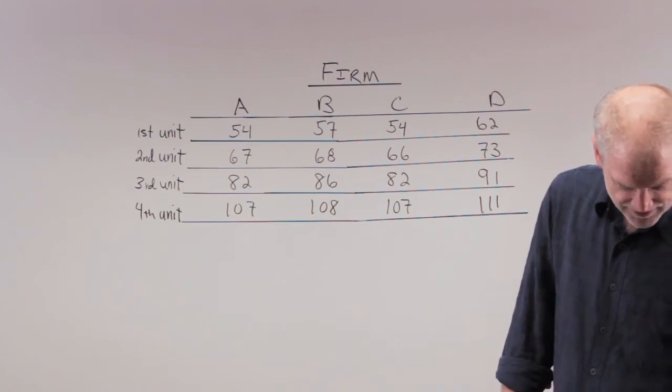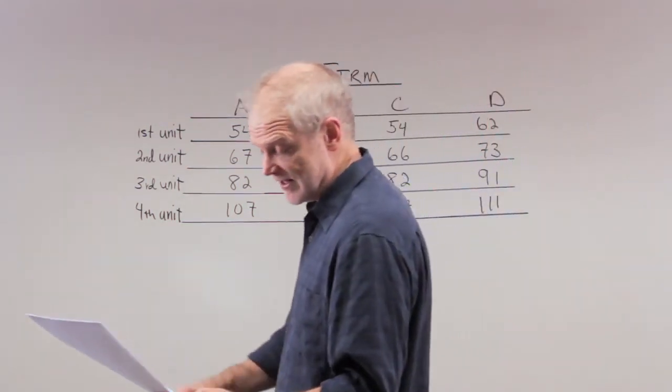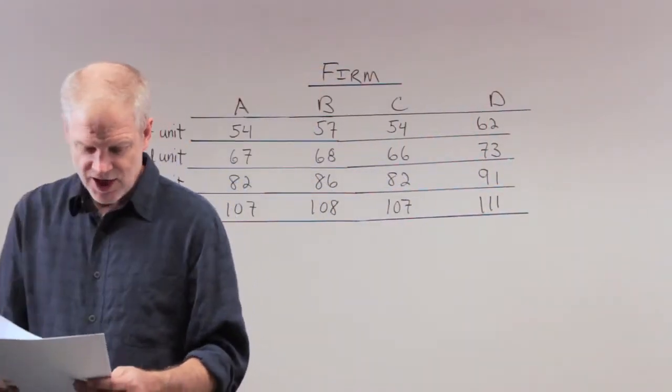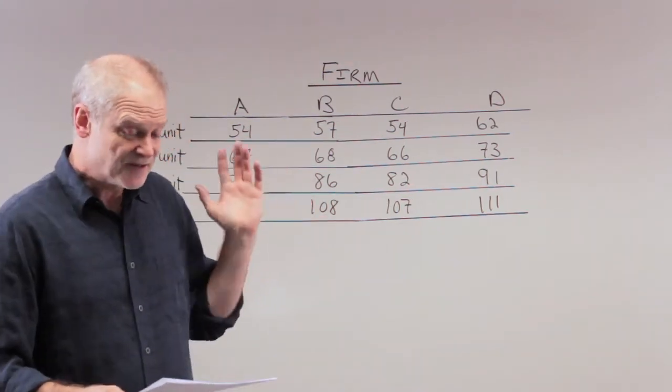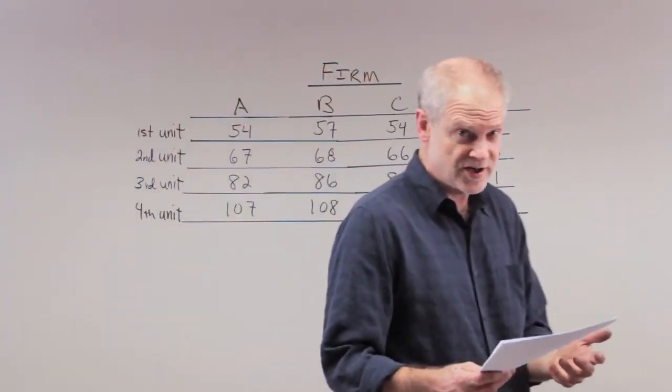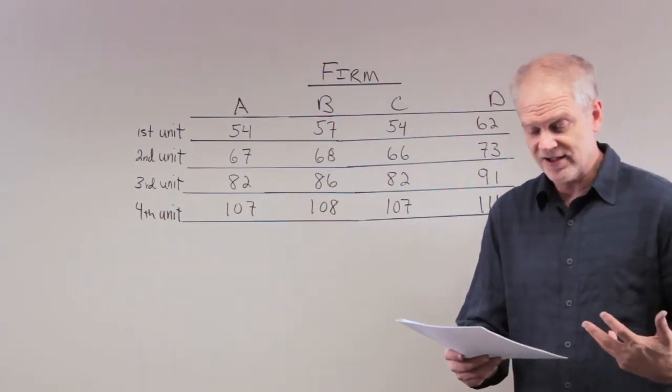So the answer to number five is B, of course. So we have finished the five problems associated with this table. It's a really nice table. A lot of questions can come from it. Likely to see this on the exam.